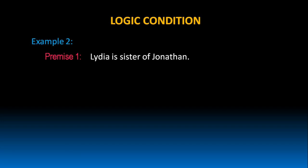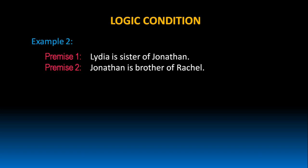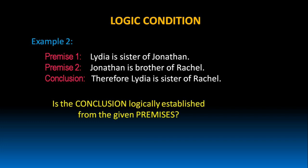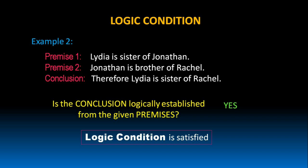Lydia is sister of Jonathan. Jonathan is brother of Rachel. Therefore, Lydia is sister of Rachel. In this example, is the conclusion logically established from the given premises? Yes, of course. Because Lydia is sister of Jonathan and Jonathan is brother of Rachel, we can conclude Lydia is sister of Rachel. That's why we can say logic condition in this argument is satisfied.